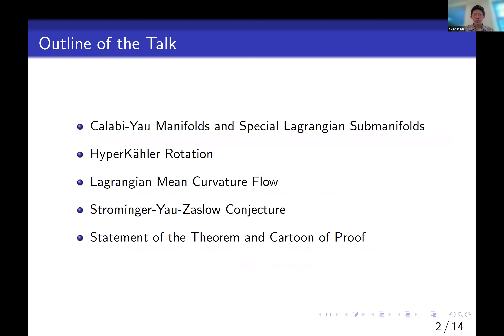The talk will be split into a few parts. First, I will try to explain the terminology that appears in the title of the talk: Calabi-Yau manifolds, special Lagrangian submanifolds, and I'll explain something called hyperkähler rotation. Then I'll explain how Lagrangian mean curvature flow enters the story. Then I'll explain the so-called Strominger-Yau-Zaslow conjecture, and then I'll give you the statement of the theorem and a cartoon of the proof.